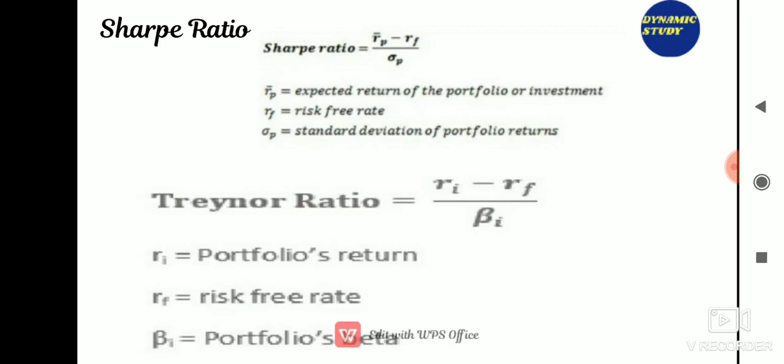Sharpe ratio measures the risk premium per unit of total risk for a security or portfolio. The formula is: Sharpe Ratio = (Expected return of portfolio − Risk-free rate) / Standard deviation of portfolio returns. Treynor's ratio is similar to the Sharpe ratio but measures the risk premium per unit of systematic risk (beta). The formula is: Treynor Ratio = (Portfolio return − Risk-free rate) / Portfolio beta. The key difference is that Sharpe divides by standard deviation while Treynor divides by beta.